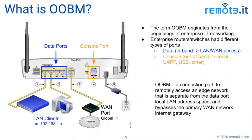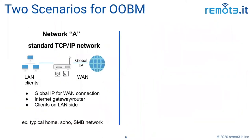So it's basically a path into an edge network and devices on that network that does not rely on the primary internet gateway at that site. We'll be using a phone as a hotspot. There are really two scenarios we could talk about for when you'd want to do this out-of-band management.